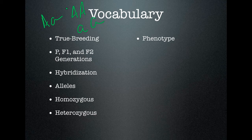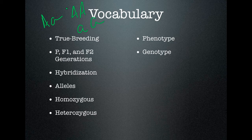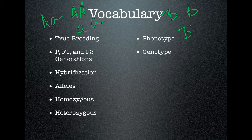Phenotype is the appearance of something. When you look at a dog and see its fur color, you are observing the phenotype of that organism. Genotype is the actual genetic makeup. The genotype of an organism can be very different from the phenotype, but the phenotype comes out of the genotype. For example, if big B is black fur in a cat and little b is white fur, and you have big B little b, your phenotype is going to be a black cat, while your genotype is one black allele and one white allele.